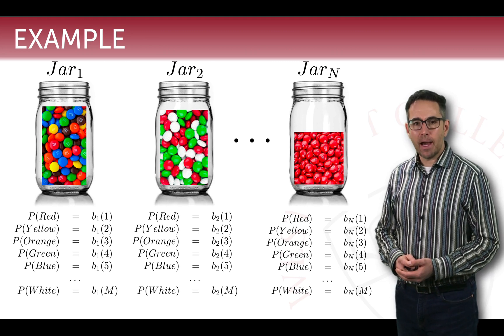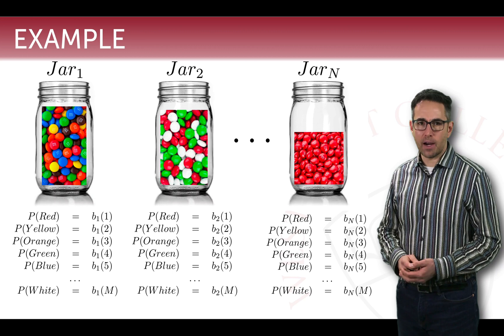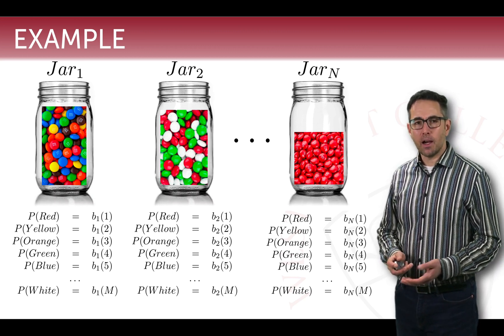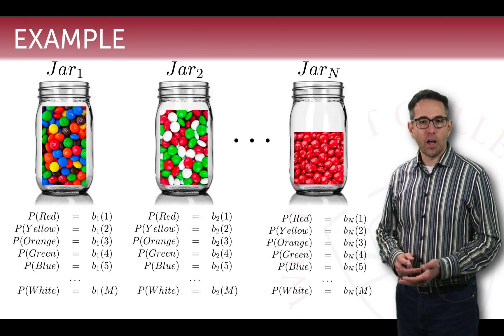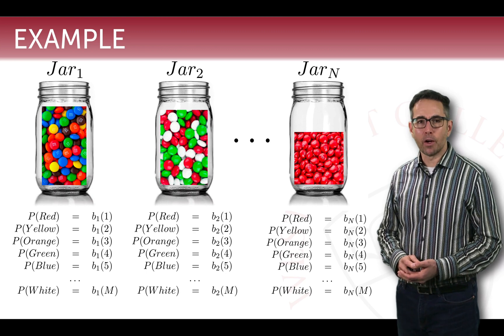So as we draw an M&M out of this jar, our probability of getting a red is going to be much lower than drawing out of jar number N. And then jar 2 has a different distribution also. It has a 33% chance of drawing a white M&M, a red M&M, or a green M&M.